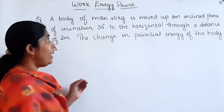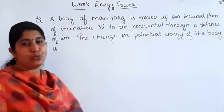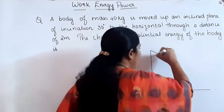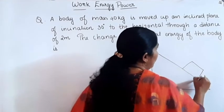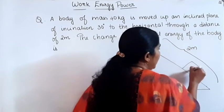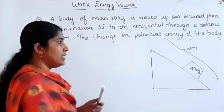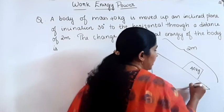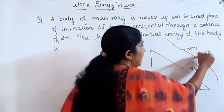Our next question: a body of mass 40 kg is moved along an inclined plane of inclination 30 degrees to the horizontal through a distance of 2 meter. We want to find out the change in potential energy of the body. The inclination is 30 degrees and the length of the inclined plane L is 2 meter.